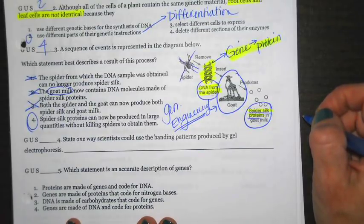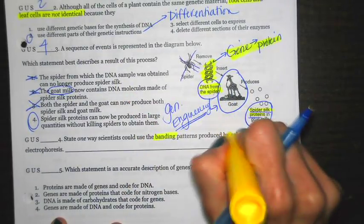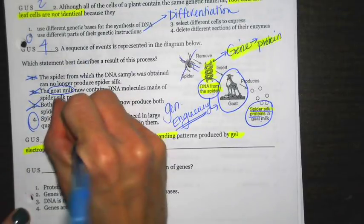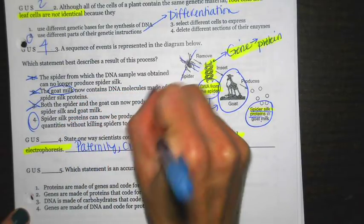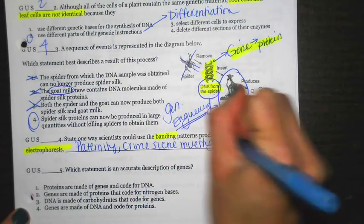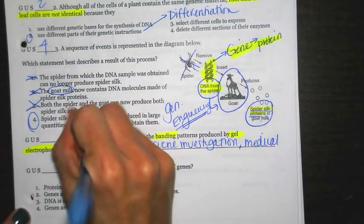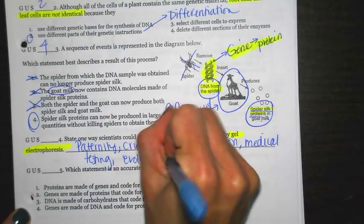State one way scientists could use the banding patterns produced from gel electrophoresis. So we have banding, then we have gel electrophoresis. Remember, gel electrophoresis is when you can compare DNA of two organisms. That's what they are talking about when they say banding. Different ways you can use this could be paternity. You can use this for a crime scene investigation, medical testing. Never do ancestry.com. They also can use this for evolutionary relationships. So how closely related are two organisms.